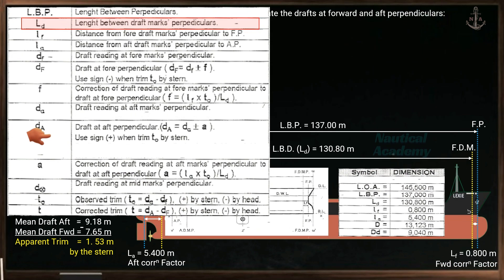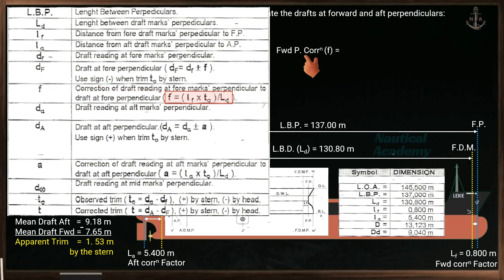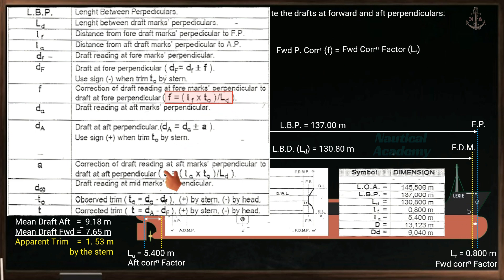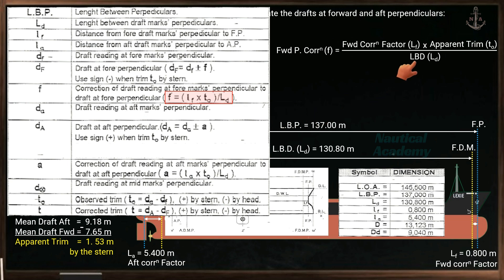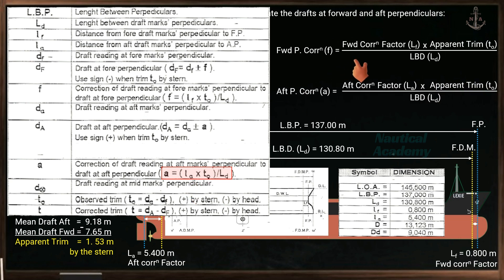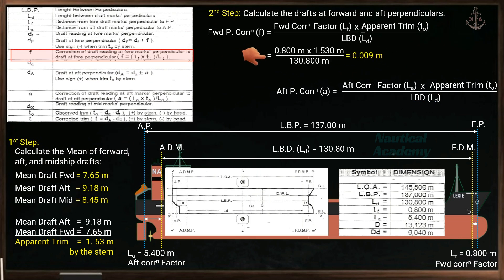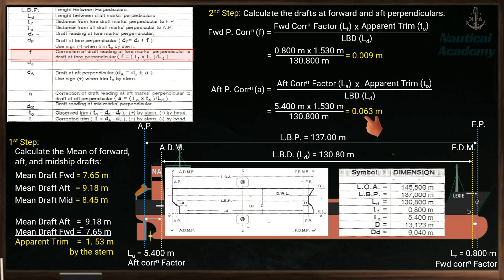Now let's look at the formula for calculating the perpendicular correction. For the forward draft marks correction, small f is the forward perpendicular correction; Lf is the distance from forward draft marks to forward perpendicular (the forward correction factor); To is the observed or apparent trim; and LBD is the length between draft marks. For the aft correction, use the aft correction factor (La) in place of Lf — the rest are the same. Using this formula, the forward perpendicular correction is 0.009 meter, and the aft perpendicular correction is 0.063 meter.